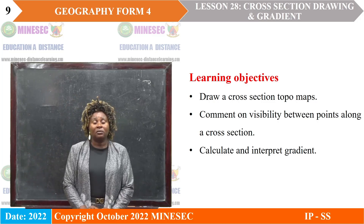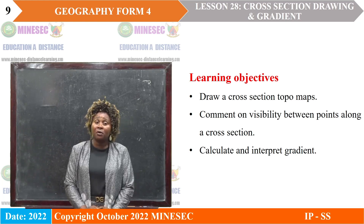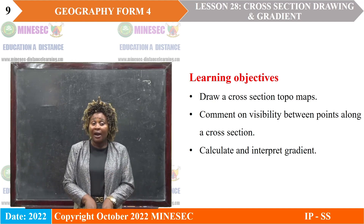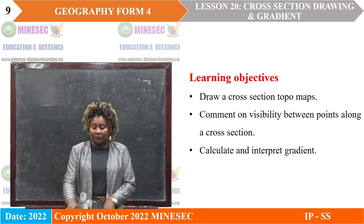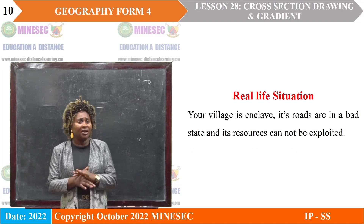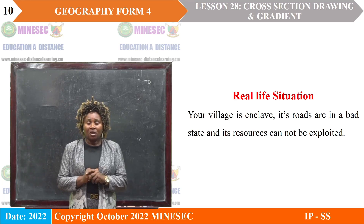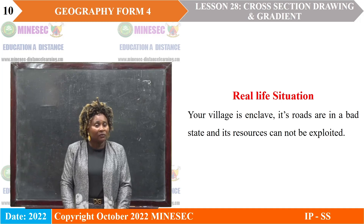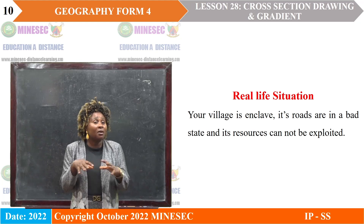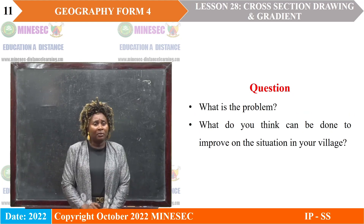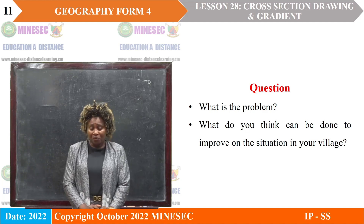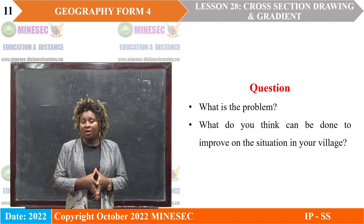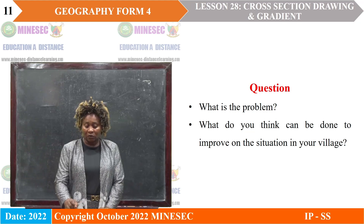At the end of this lesson, learners should be able to draw a cross section of a topographic map, comment on the visibility between points along a cross section, and calculate and interpret gradient. Let us begin our lesson by describing this situation in real life: your village is inclined, its roads are in a bad state, and its resources cannot be exploited. What is the problem, and what do you think can be done to improve the situation in your village? Let us follow the lesson to the end and come up with answers.